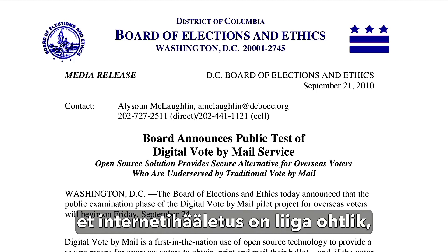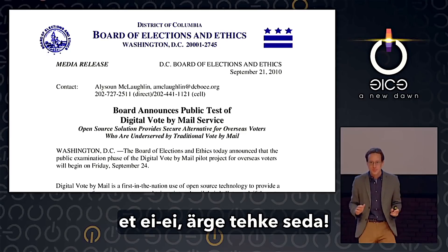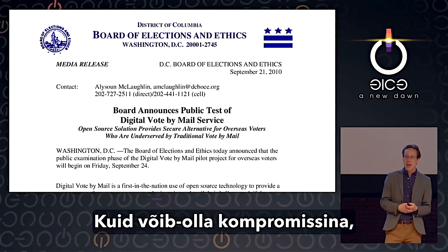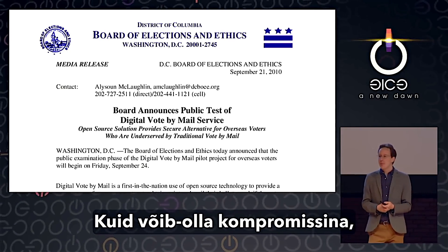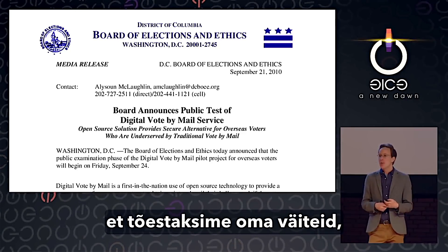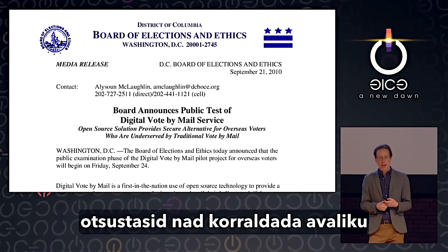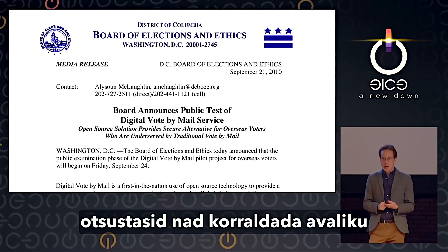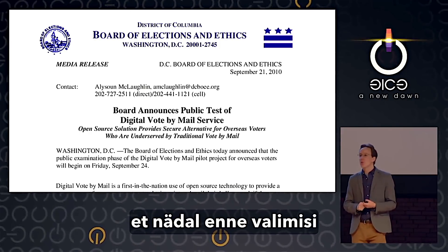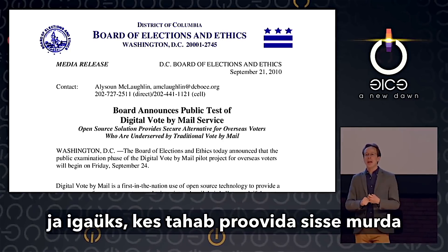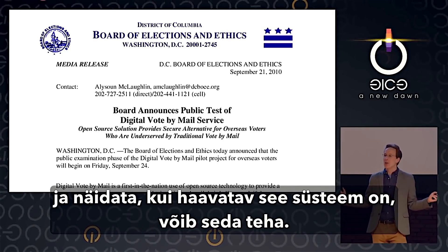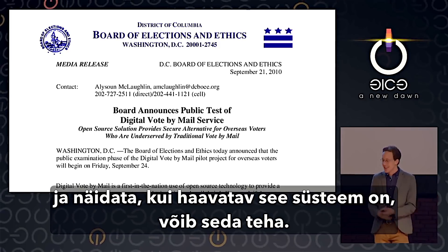The researchers all said, no, internet voting is too dangerous. But D.C. did it anyway. As maybe a compromise, they decided to hold a public trial — the week before the election, they'd hold a mock election and anyone in the world who wanted to try to hack in and show how vulnerable it was could do so.